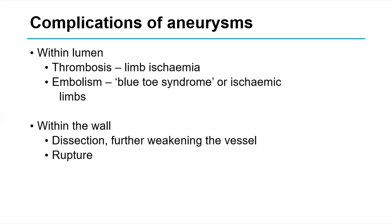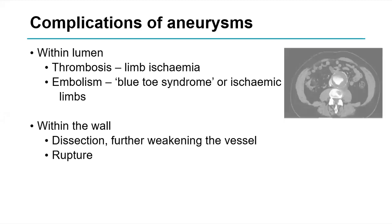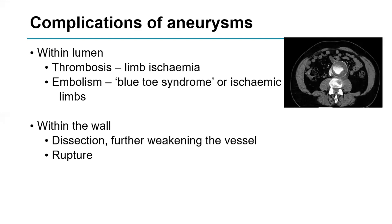Complications within the lumen: we can get thrombosis within the aneurysm — you may see a 9 cm aneurysm that's completely thrombosed. On the CT scan the red arrow points to thrombosis within the aneurysm itself. This thrombosis can progress to completely occlude the lumen. Similarly, thrombus within the vessel can embolise, causing blue toe syndrome where the toes have patches of ischaemia, and in the long term, if arteries are all silted out, ischaemic limbs.